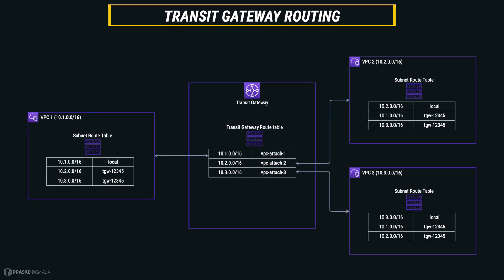Now let me show you how simple routing works with Transit Gateway. Let's consider we have three VPCs — VPC1, VPC2, and VPC3 — with subnets and corresponding subnet route tables. The local CIDR range for each VPC points to its local route, and the CIDRs for the other two VPCs point to the Transit Gateway, which means all traffic from VPC1 destined for VPC2 or VPC3 goes to the Transit Gateway as the next hop. The Transit Gateway has its own route table, and each VPC is attached to the same default route table — this is called the association. We can have multiple route tables and associate each VPC to a different route table if required, but any VPC can be associated with only one route table.